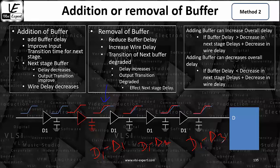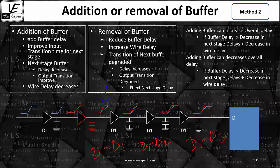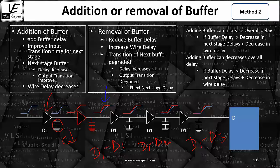It will be like D1 minus delta 1 for the first, D1 minus delta 2 for the second, and D1 minus delta 3 for the third. So the delay of the next three buffers is going to change. Delta 1, delta 2, and delta 3 represent the amount by which each delay decreases. Now for the first buffer, since you added a buffer here, the load for this buffer decreases — the capacitance C decreases — so the delay of this buffer also decreases, giving us D1 minus delta 4.